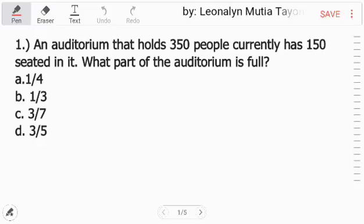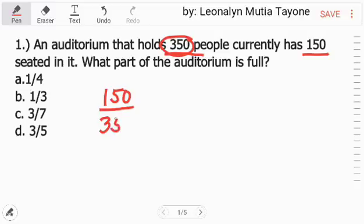Number one, an auditorium that holds 350 people currently has 150 seated in it. The question here is, what part of the auditorium is full? 150 na mga tao ang nandun. So, ang numerator natin ay 150. Yung kabuuhan ng auditorium, yan yung denominator natin na 350.